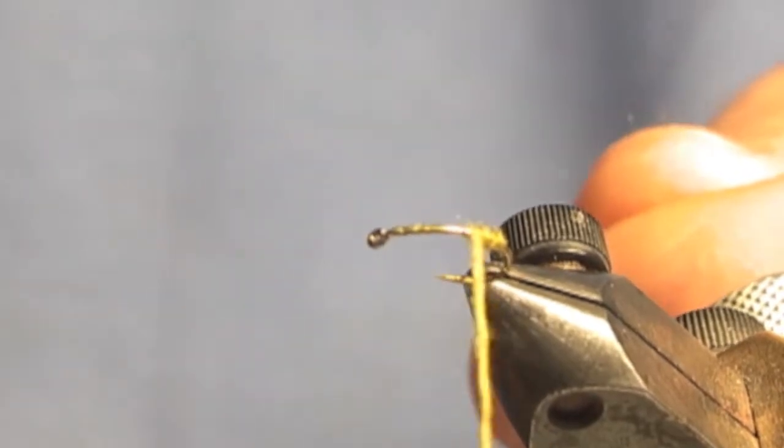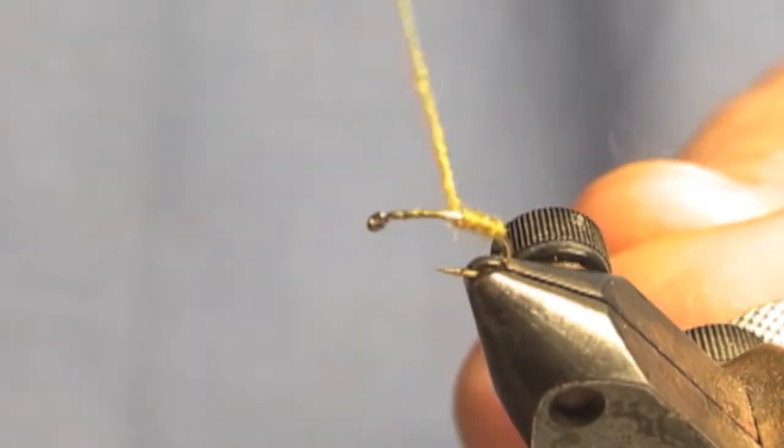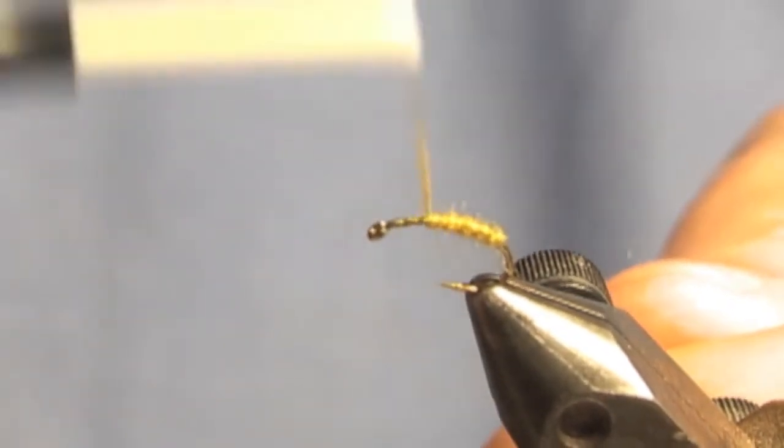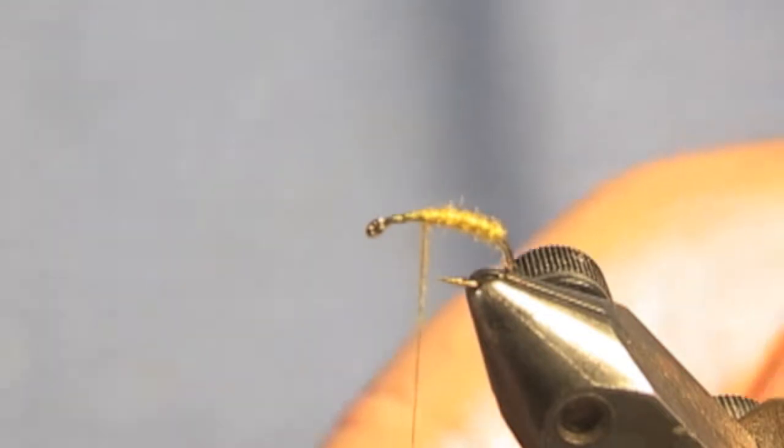You work your way up to about two-thirds of the way to the eye. You don't want to crowd it, and you'll notice I'm leaving some bare hook there.